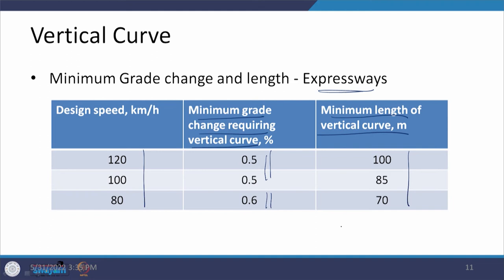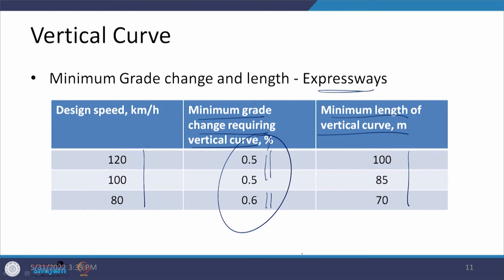These are the things to account for when calculating the length of a vertical curve. If a calculated value is found, check it against the minimum requirements. Even if the grade change values indicate no curve is applicable, go back and verify what minimum length must still be provided.